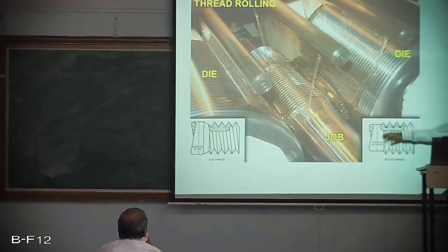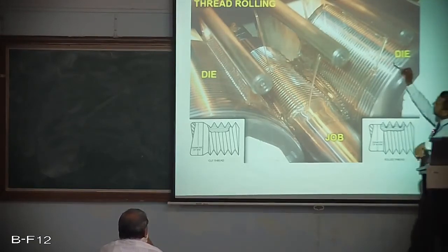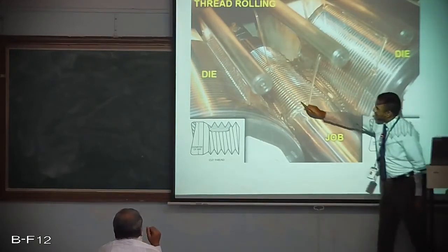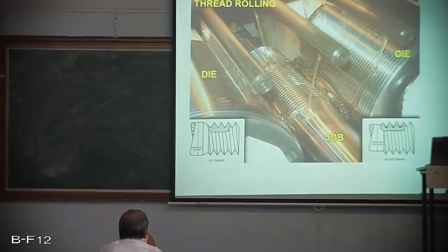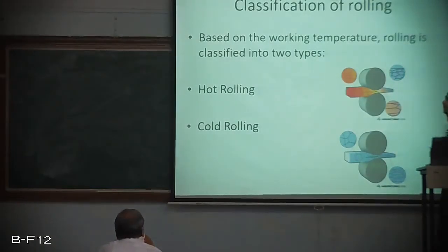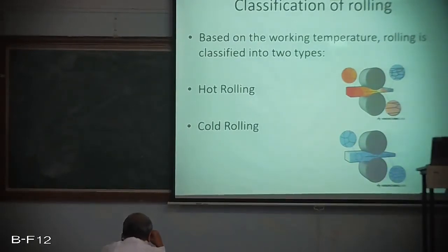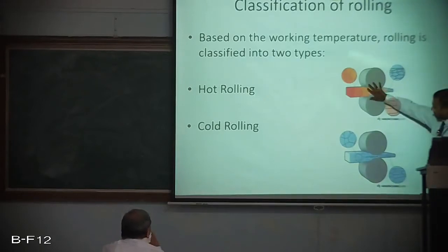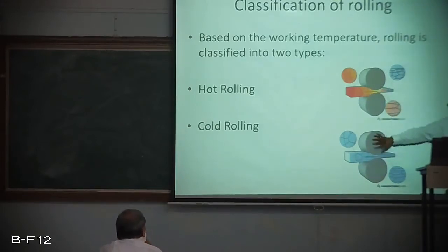A thread rolling operation can be seen, where the die and job are shown with threads being created using the dies. Rolling can be classified based on working temperature into two types: hot rolling and cold rolling. The process remains the same — only the temperature changes.